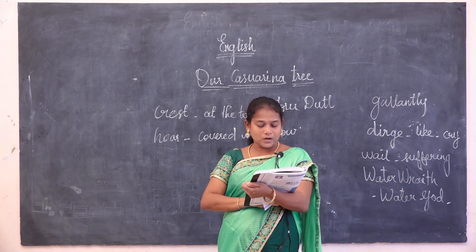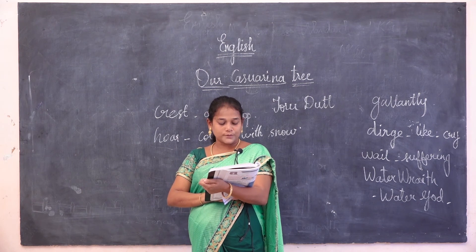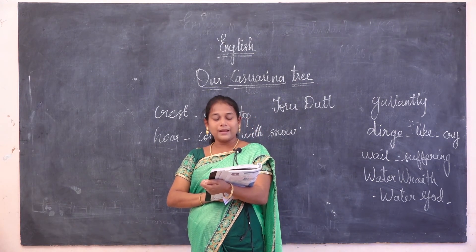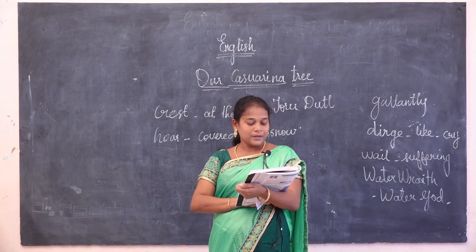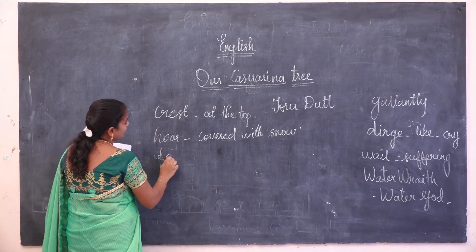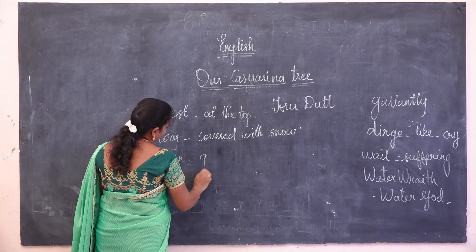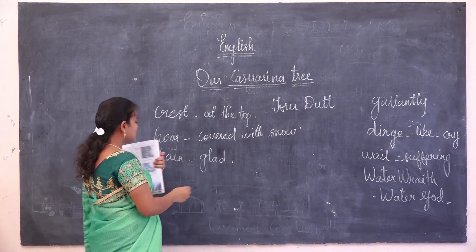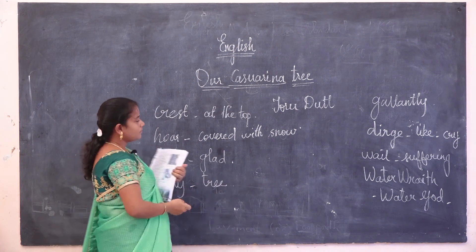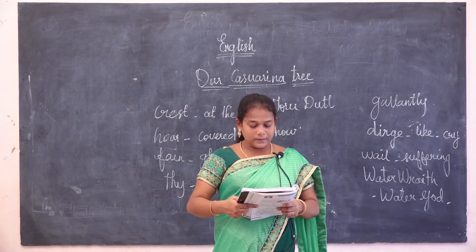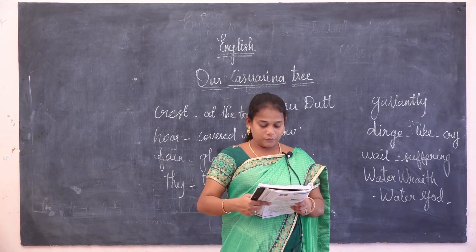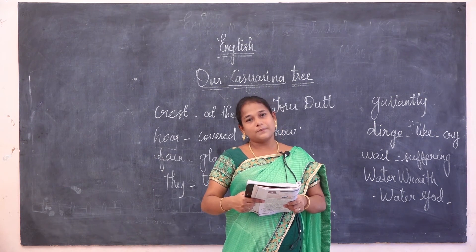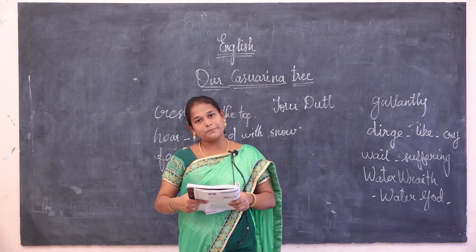In the last stanza: 'Therefore I fain would consecrate a lay unto thee, honour of those, who now in blessed sleep for aye repose.' She wants to consecrate — make the tree holy, immortal, deathless. 'Fain' means glad or happy — she is happy to make this tree immortal. 'Blessed sleep' and 'repose' are metaphors representing death — those who have passed away.